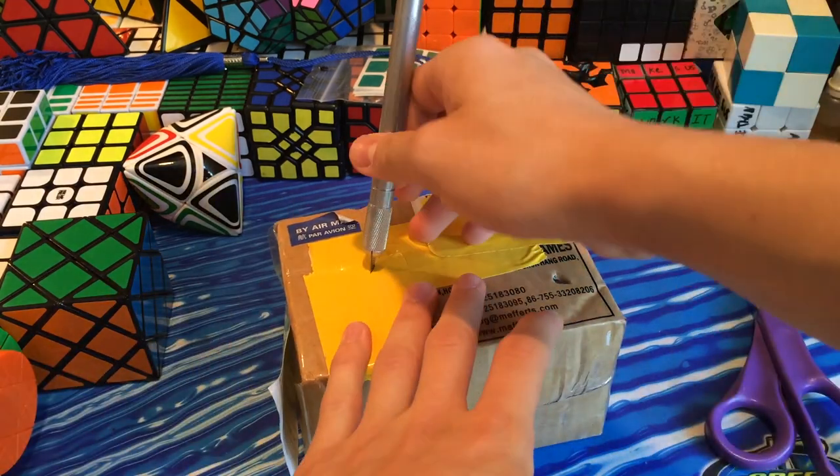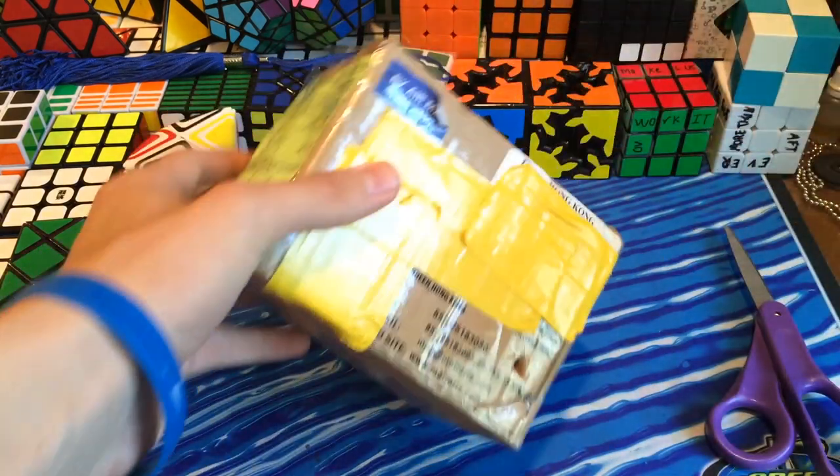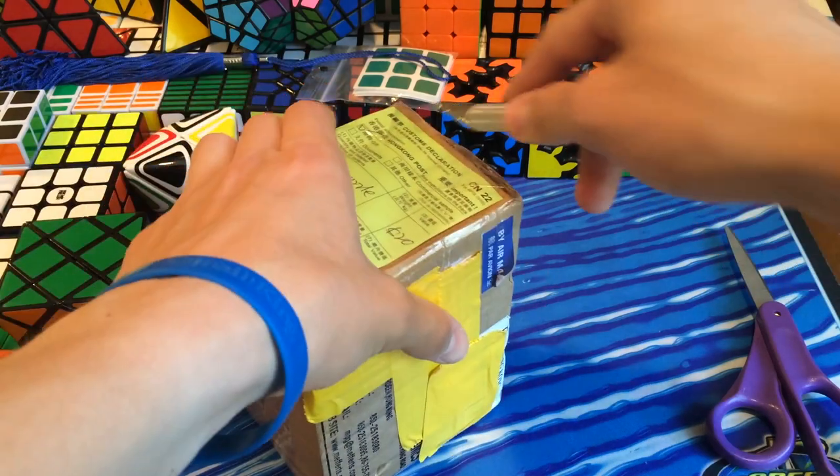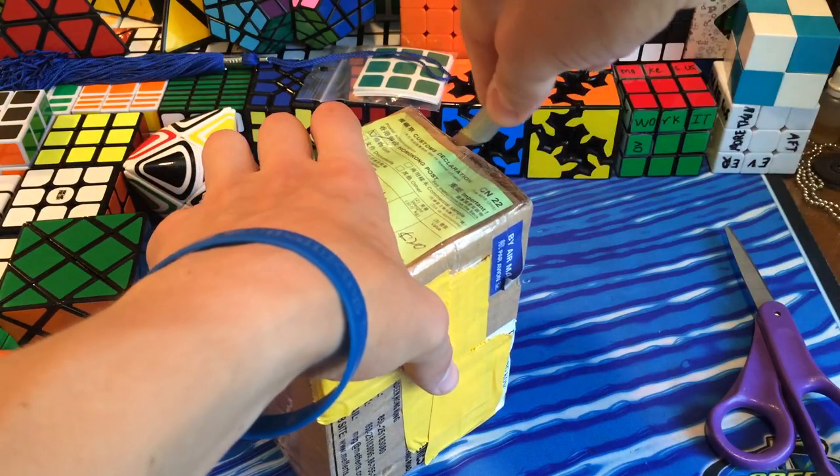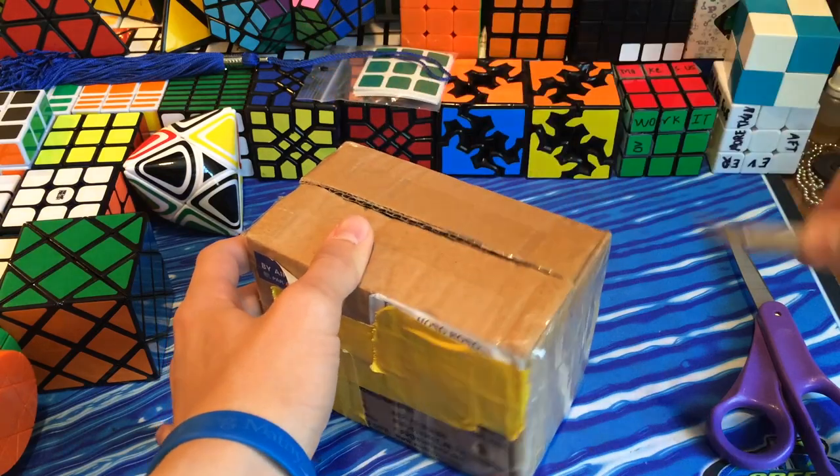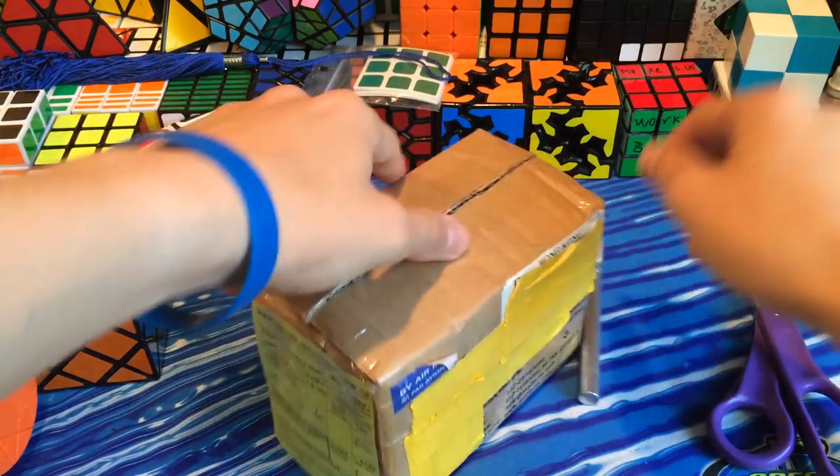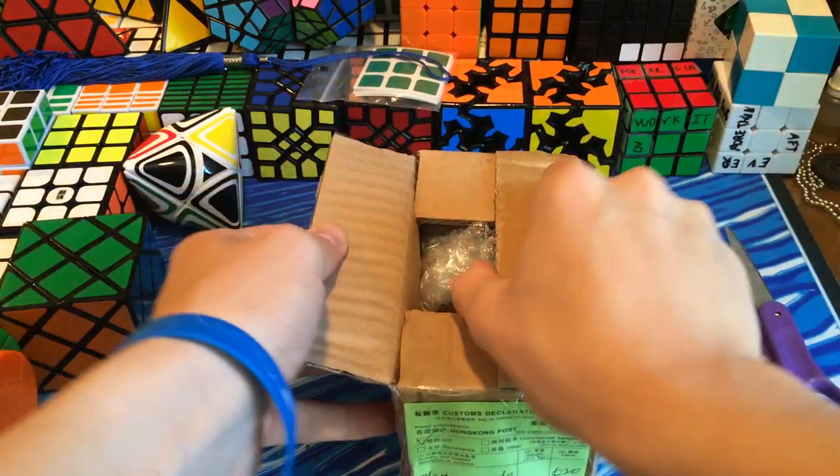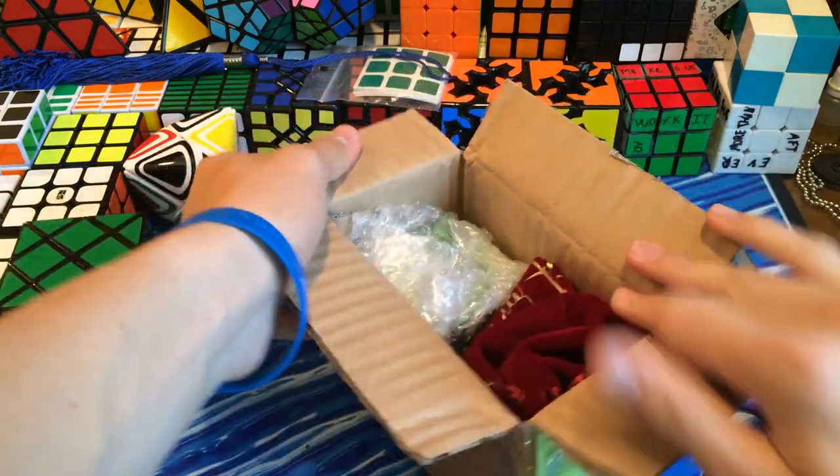I'm not actually sure what is in this package. I'm not 100% sure. I have an idea of what it is, but it can be multiple things because I have multiple things coming from mefferts. If I had to guess, it's probably in the title of this video, actually. If I had to guess, it's the green jade cube ghost cube.